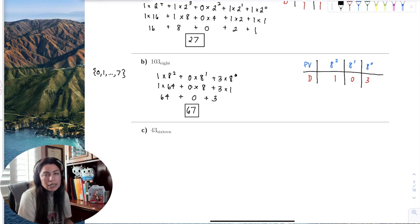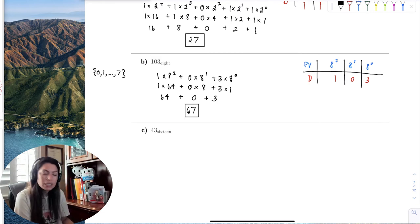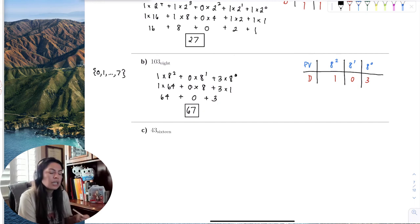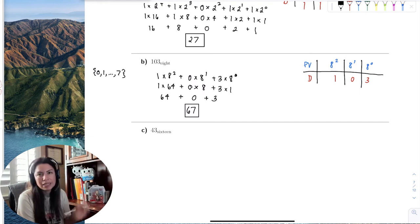So 103 in base 8 is equivalent to 67 in base 10. Once again, when you go from a smaller base than base 10, there are more groups of 8 that fit into 103 than groups of 10. That's why the base 10 number is smaller.